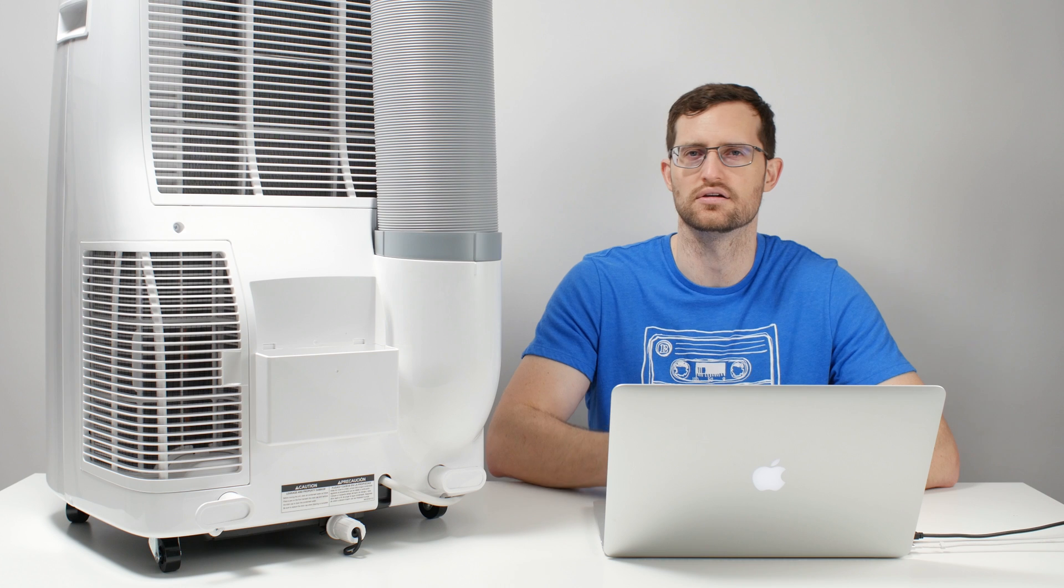The two inefficiencies that stand out the most are the heat that the unit adds through its ducting and the heat that the unit adds to the room via infiltration air. So what exactly are those two sources of heat? The first is easy to explain. The unit exhausts hot air through its duct on the back here.